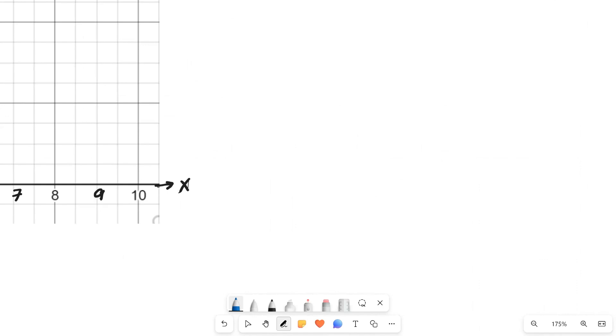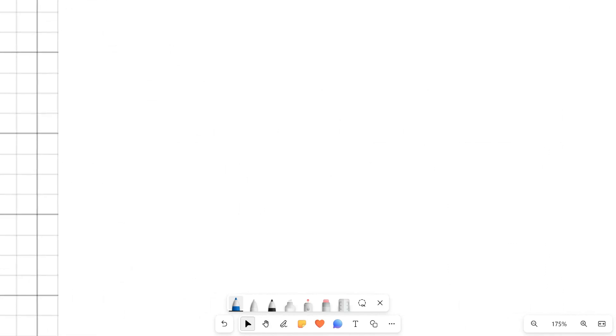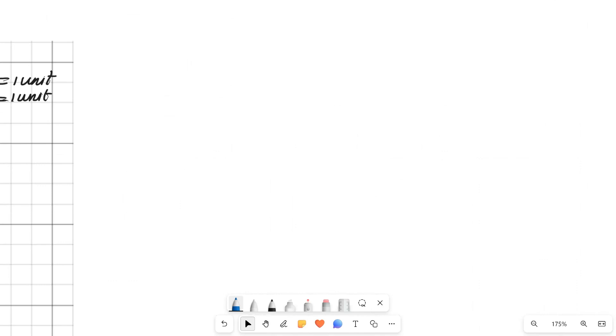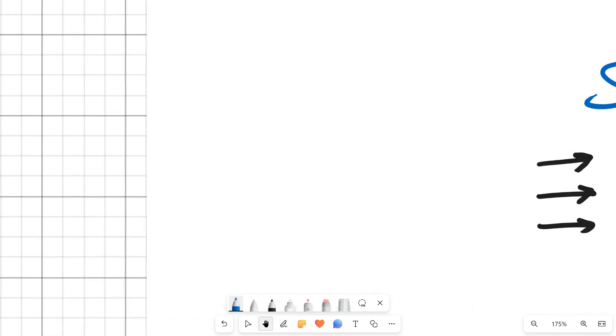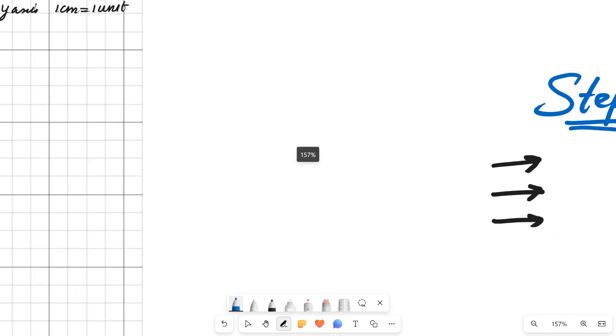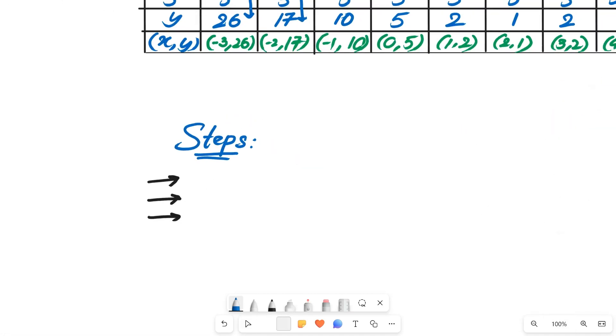We cannot do the verification here, so there are three important steps on the ruled page: we need to do the table, we need to write the steps, and also we need to do the verification. But there is no need of verification here because there's nothing to justify. And there are three to four steps for this graph that we need to write on the ruled page below the table.